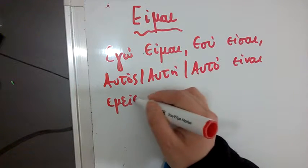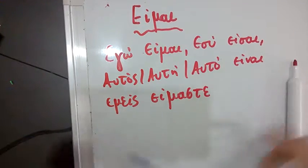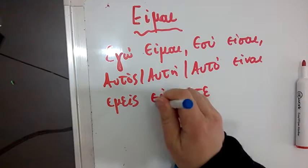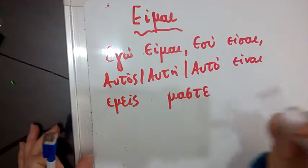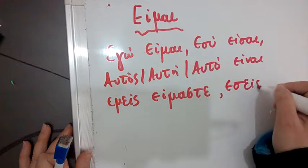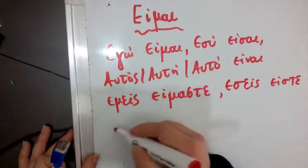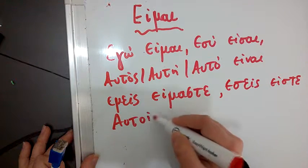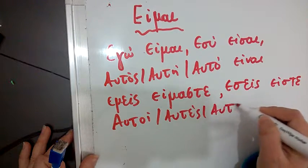Εμείς είμαστε, εσείς είσαστε or είστε, αυτοί, αυτές, αυτά είναι.